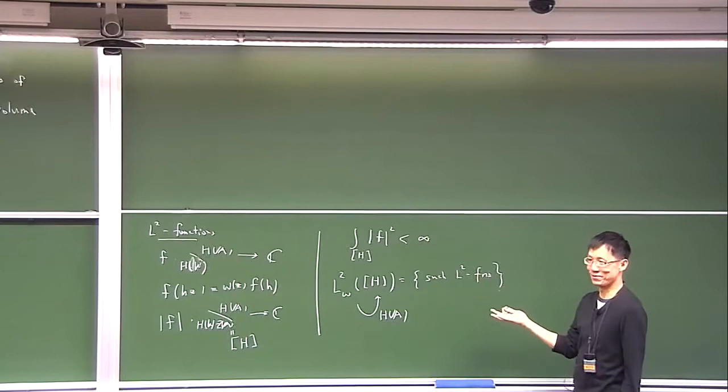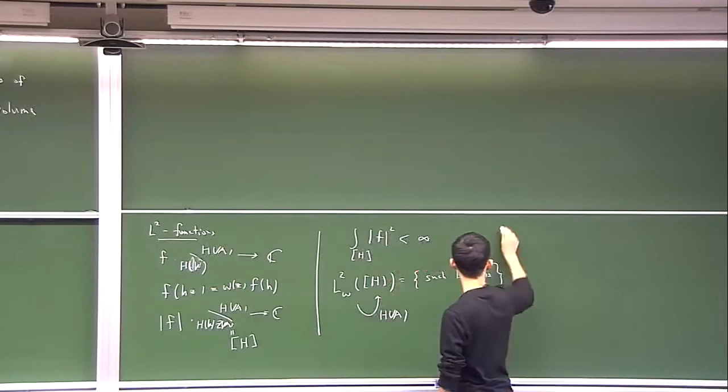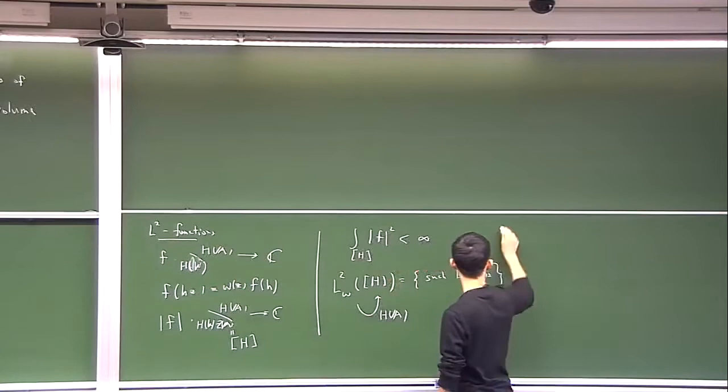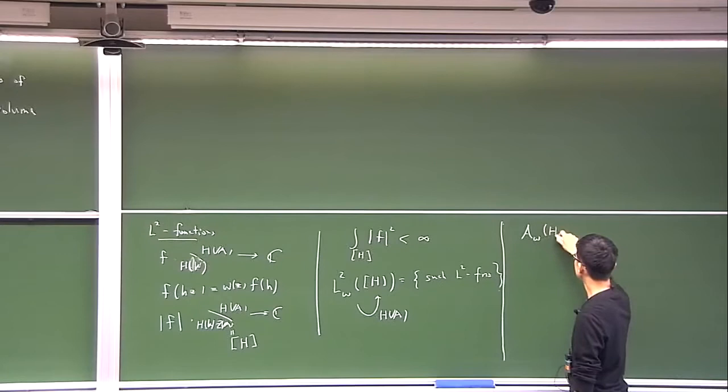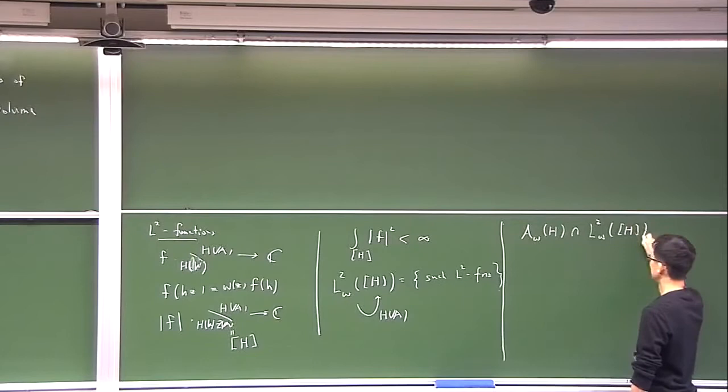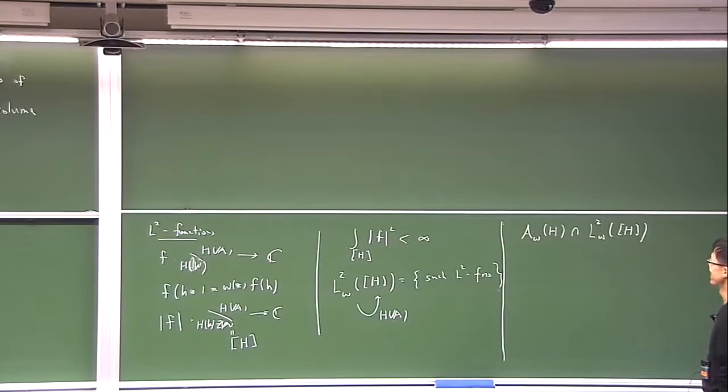You have two spaces of functions which may have nothing to do with each other — these are L^2 conditions, and these are smoothness and finiteness conditions which I have not specified. But if you try to take the intersection, you see that there'll be quite a number of things in there. And inside here, there's a certain subspace called the space of cusp forms, which is somehow not the whole thing, but it is somehow the most important part.